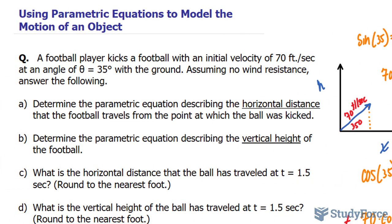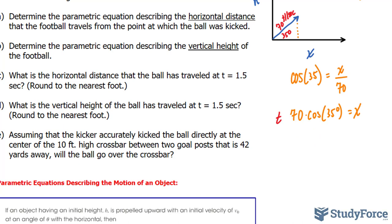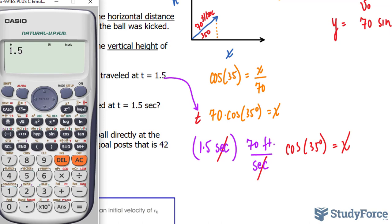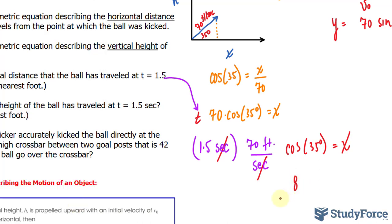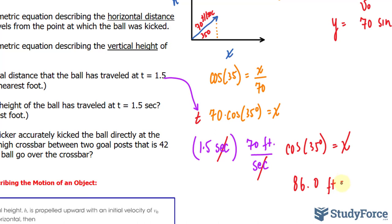Question C: what is the horizontal distance that the ball has traveled at 1.5 seconds? This parametric equation represents the horizontal distance, and they tell us the time is 1.5 seconds, so I'll replace t with 1.5. Using our calculator, 1.5 times 70 times cosine 35 equals 86.01. So in 1.5 seconds, this ball has traveled 86.01, or simply 86 feet horizontally.